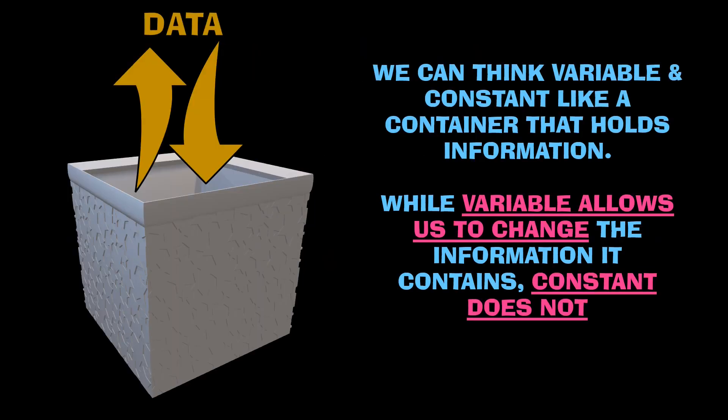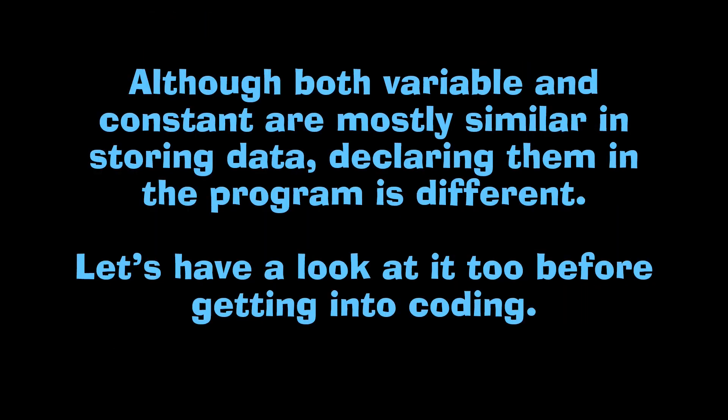For better understanding, you can think of variables and constants as containers which allow us to store things. The difference is that a variable allows us to change what it contains, while a constant does not — allowing or not allowing the user to manipulate the data under them is the only difference.